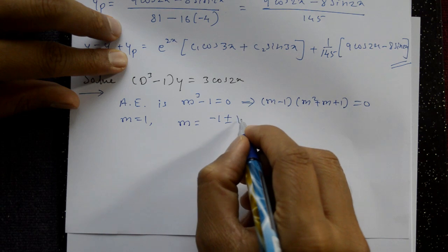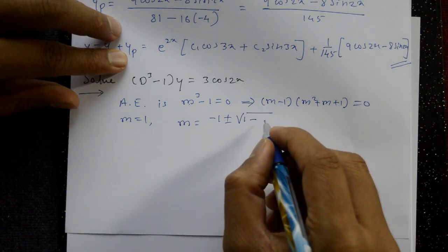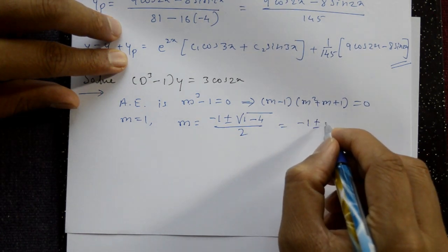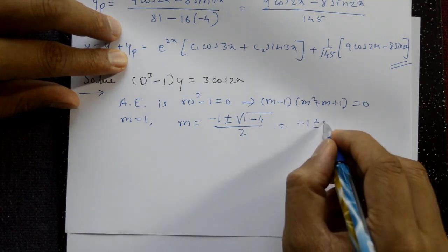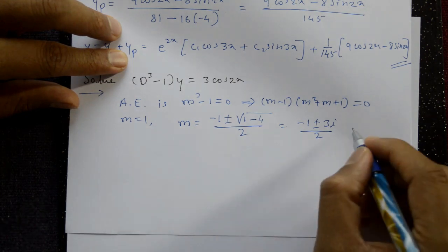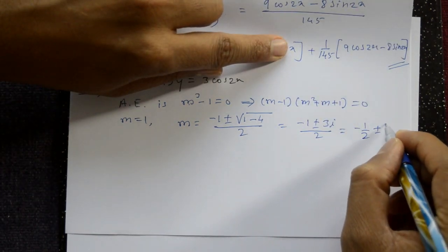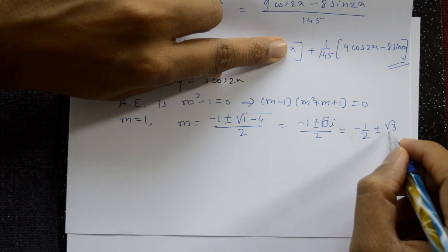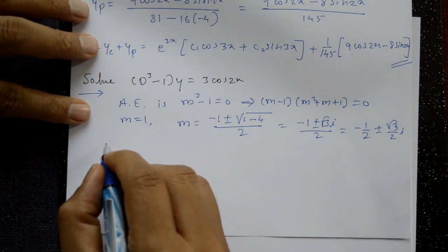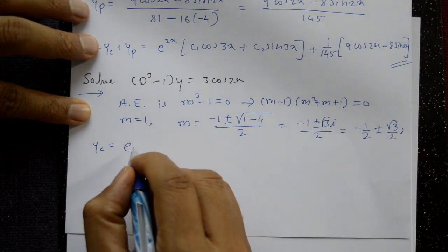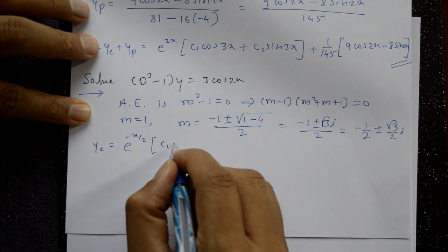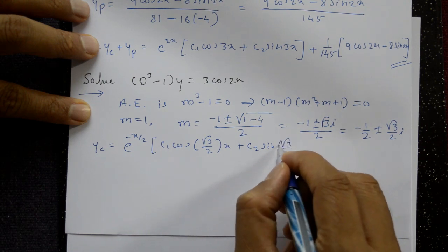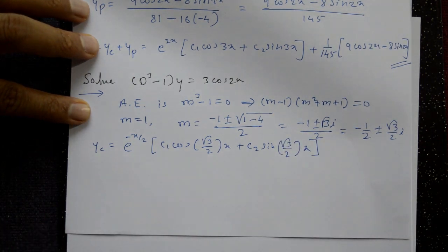Using the quadratic formula: m = (-1 ± √(1 - 4)) / 2 = (-1 ± √(-3)) / 2 = -1/2 ± (√3/2)i. The complementary function is: CF = c₃e^x + e^(-x/2) · [c₁ cos(√3/2 · x) + c₂ sin(√3/2 · x)].